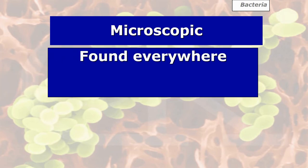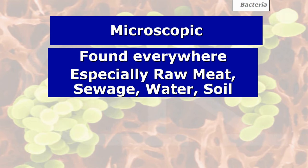Bacteria are found everywhere — they are ubiquitous — but there are four main places to remember: raw meat, sewage, water and soil. The main depository for bacteria on the planet is soil, followed by water, since two-thirds of the planet is covered in water with bacteria mainly in the sediment. Sewage is also a big problem because it contains a host of various diseases, infections and parasites.